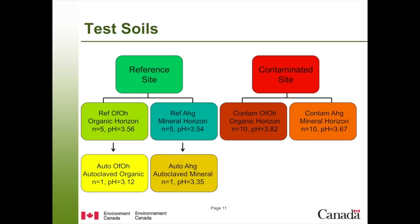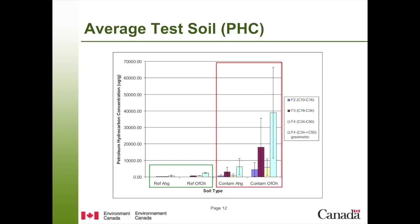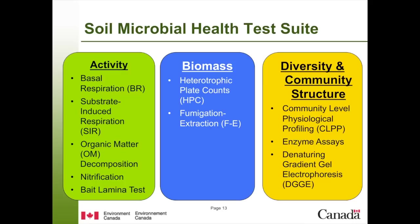We sampled two sites: the reference site and the contaminated site. At the reference site, we sampled two horizons — the OFOH horizon and the AHG horizon — with a pH of about 3.5, and took five samples from each horizon, plus a few extra autoclaved control samples. At the contaminated site, we also took OFOH and AHG horizons, this time with 10 samples from each. The 10 vs. 5 difference was based on a power analysis. The reference OF and AHG were slightly contaminated with F4 fraction, but most contamination was at the contaminated site, with F3 and F4 as the predominant petroleum hydrocarbons.